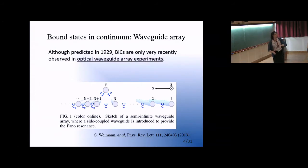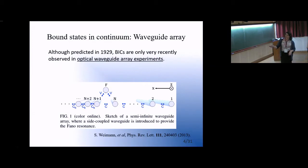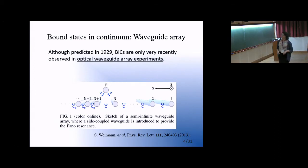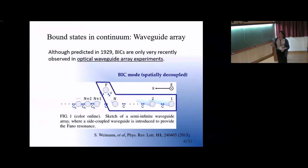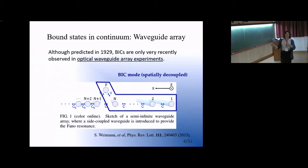They introduce a side-attached extra element into the array. This side-attached element defines sort of the defect site of the system. The BIC mode then appears as a special case as you carefully tune the couplings to the side-attached or impurity element of the array, as well as the couplings along the main chain.